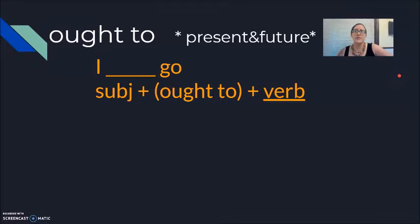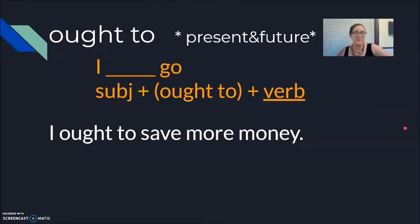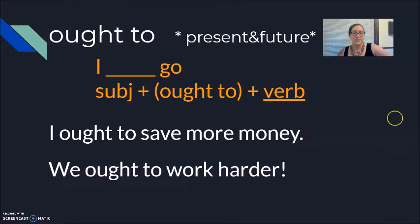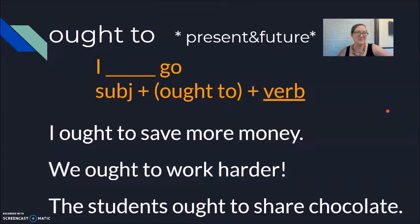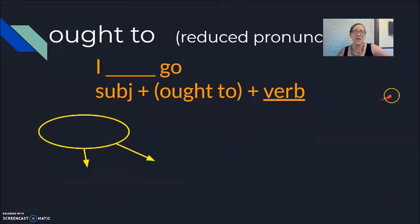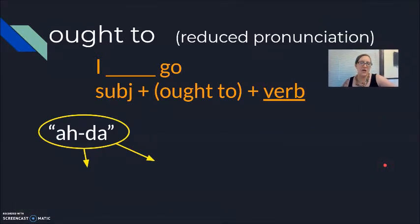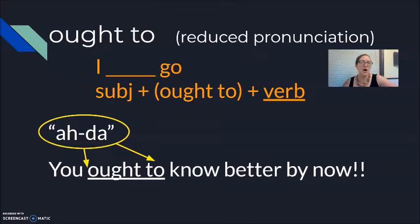Our newest modal today is 'ought to.' We use this for the present and the future, following that same format of subject, modal, infinitive or unchanged verb. Examples: I ought to go. I ought to save more money. We ought to work harder. The students ought to share chocolate with the teacher. Ought to is a less common modal — it feels older, more formal, more along the lines of British English. However, if you'll be taking an English examination or using English at an academic level, you ought to know the modal verb 'ought to.' It also has a fast reduced pronunciation — sounds a lot like 'oughta go.'